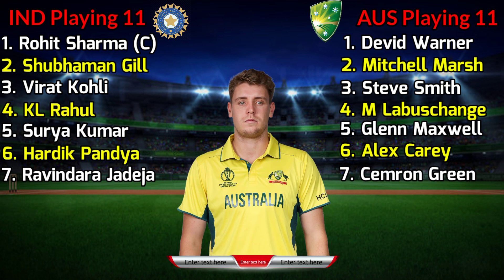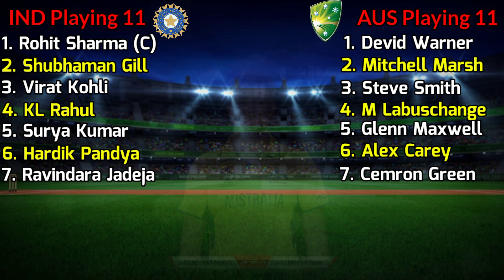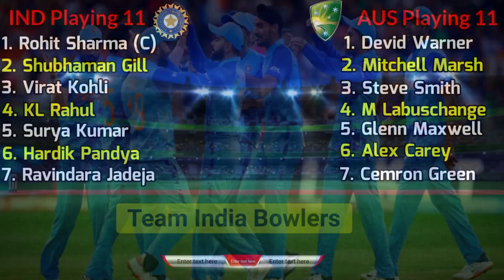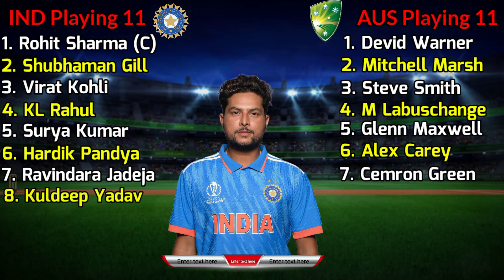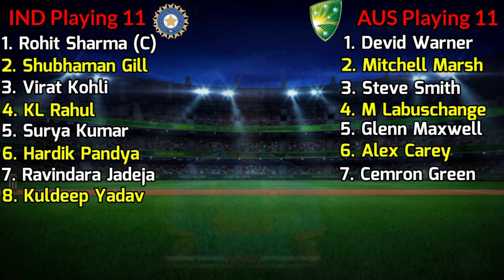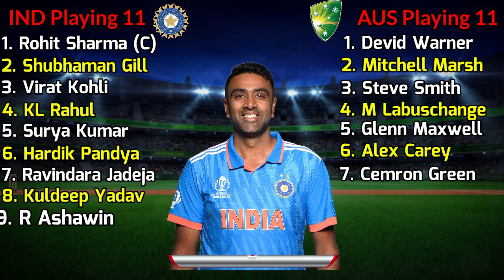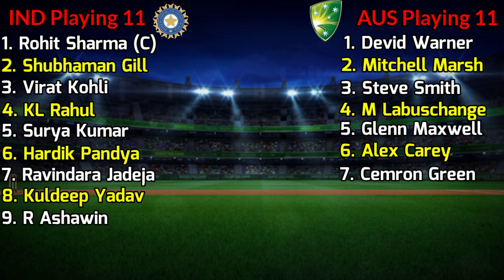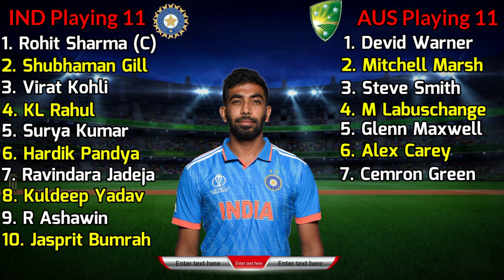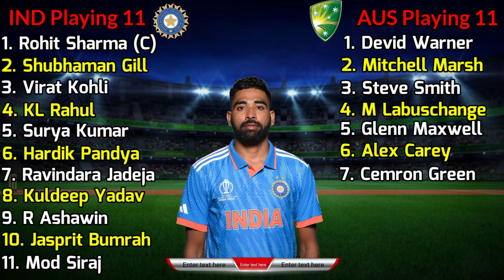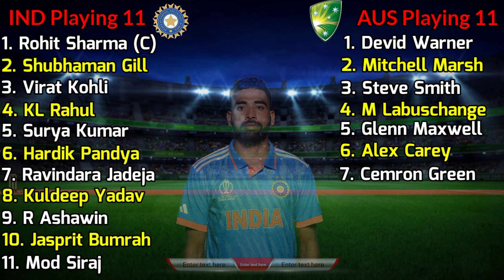No. 7 Cameron Green, Right Hand Allrounder. Team India Bowlers. No. 8 Kuldeep Yadav, Left Arm Spinner. No. 9 Ravichandran Ashwin, Right Hand Allrounder. No. 10 Jasprit Bumrah, Right Hand Fast Bowler. No. 11 Mohammed Siraj, Right Hand Fast Bowler.